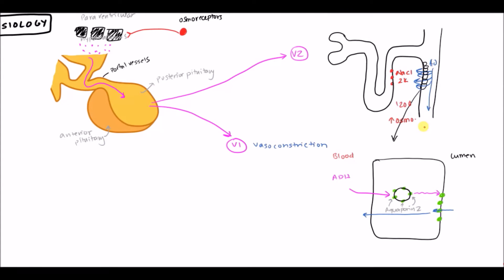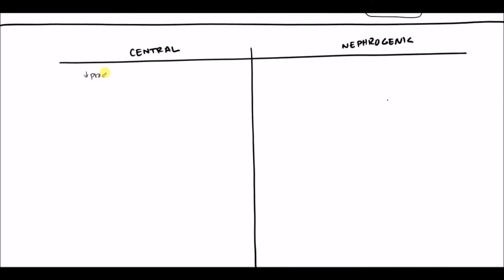This covers the general physiology important for understanding the disease. The two types are central and nephrogenic diabetes insipidus. With central, the problem is decreased production by the hypothalamus or posterior pituitary. With nephrogenic, there is a problem with the response by the kidney — the posterior pituitary and hypothalamus are producing and secreting enough ADH, but the kidney is just not responding the way it should.